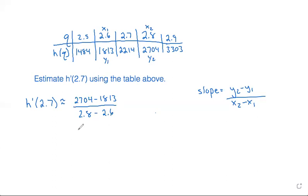So then simplifying this data we get 2704 minus 1813 is 891 over 2.8 minus 2.6 is 0.2, so then dividing 891 divided by 0.2 is 4455.